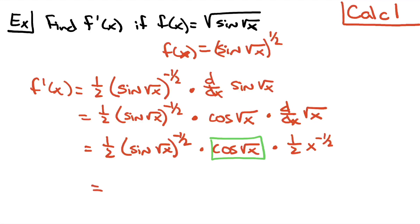So writing that now, we'll have cosine of square root of x, and then all over the 4 coming from that 2 times 2, and then the square root of the sine square root of x times another square root of x, for a final answer there.